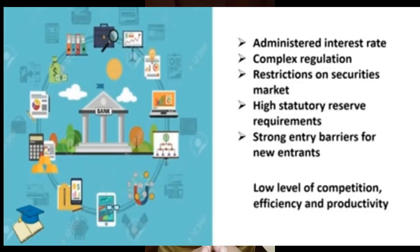In the administered or state-controlled financial system, there were administered interest rates, meaning the government used to control the rate of interest on funds. There were also many regulations with regard to the movement of funds, and restrictions on the security market and stock exchange. All these led to low levels of competition, efficiency, and productivity.